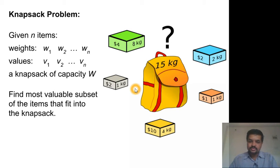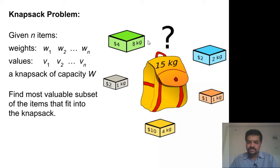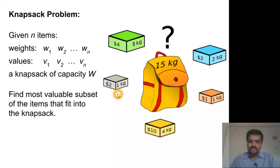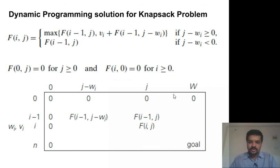A brute force solution for this would be trying out all subsets of these n items, and among the ones which fit into the knapsack, finding the one which is most valuable. That is an exhaustive solution. Because we have 2^n subsets of n items, the time efficiency of this solution would be at least exponential. So is there a better solution — something like a polynomial solution? Fortunately there is one using dynamic programming.